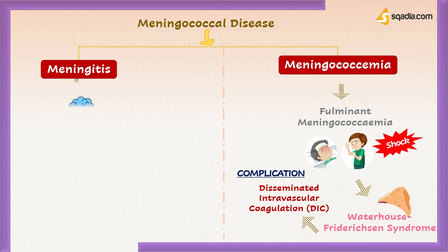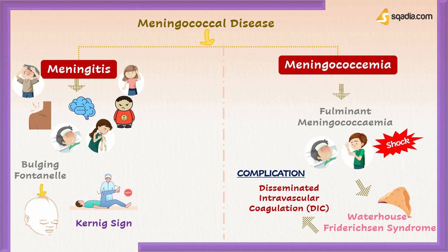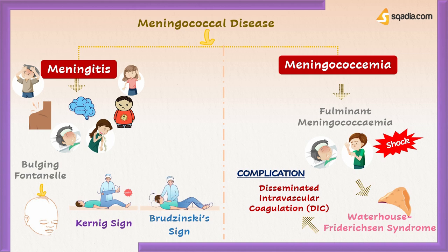Meningitis is an inflammation of the protective membranes covering the brain and spinal cord, with sudden onset of intense headache, stiff neck, fever, vomiting, irritability, and lethargy. A bulging open anterior fontanel may be a sign of meningitis in neonates, while older patients may display a stiff neck, positive Kernig's sign — where a patient lying flat with thighs bent at the hip and knees at 90 degrees resists and feels pain when the knee is straightened — and Brudzinski's sign, in which lifting the patient's head off the table causes involuntary leg elevation.